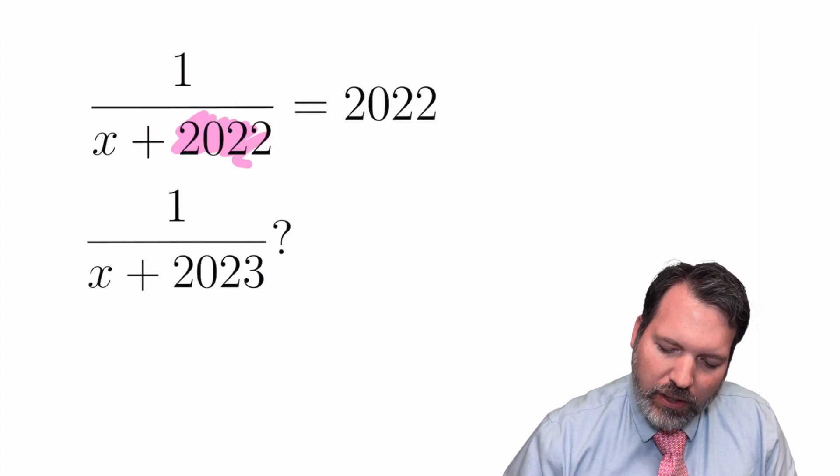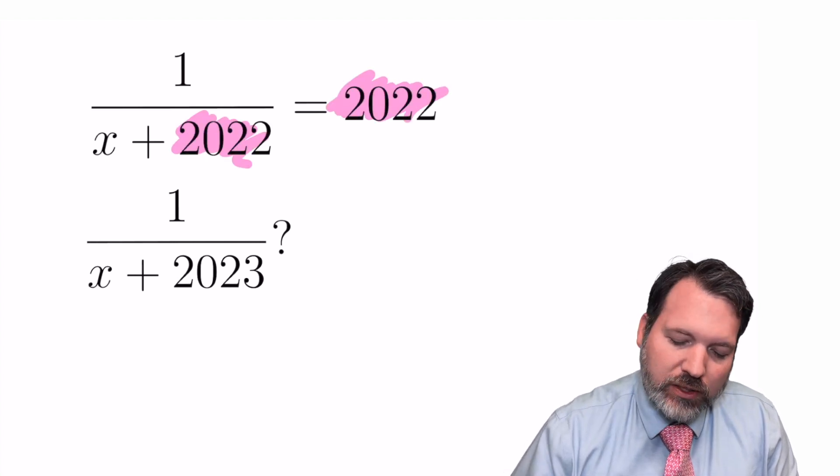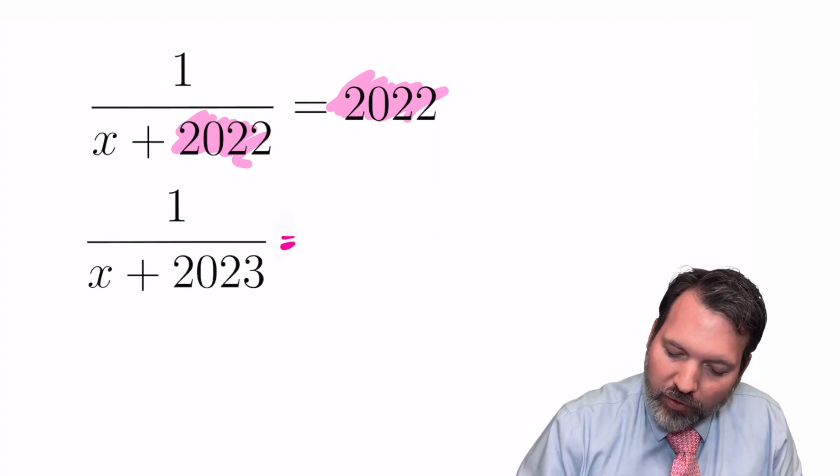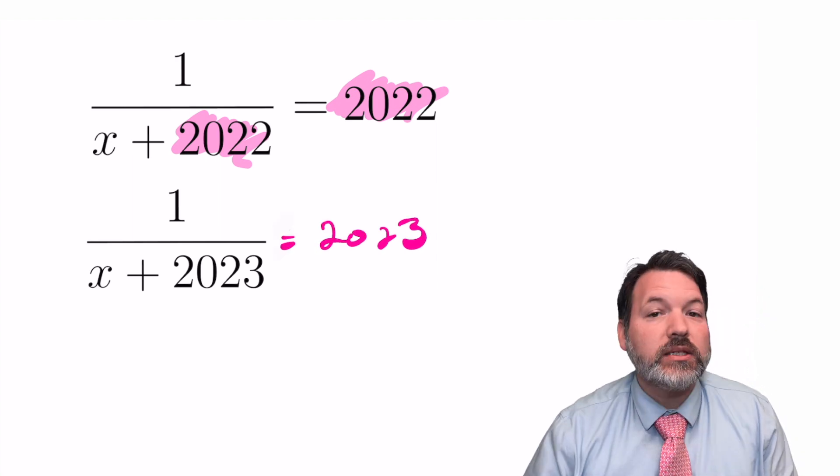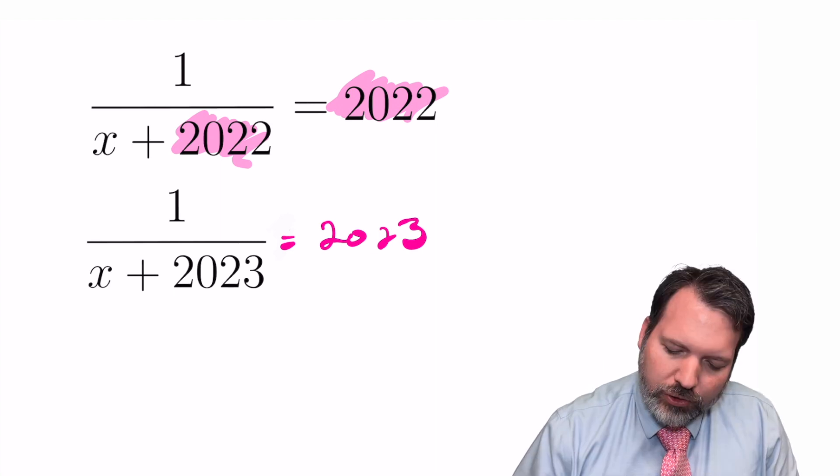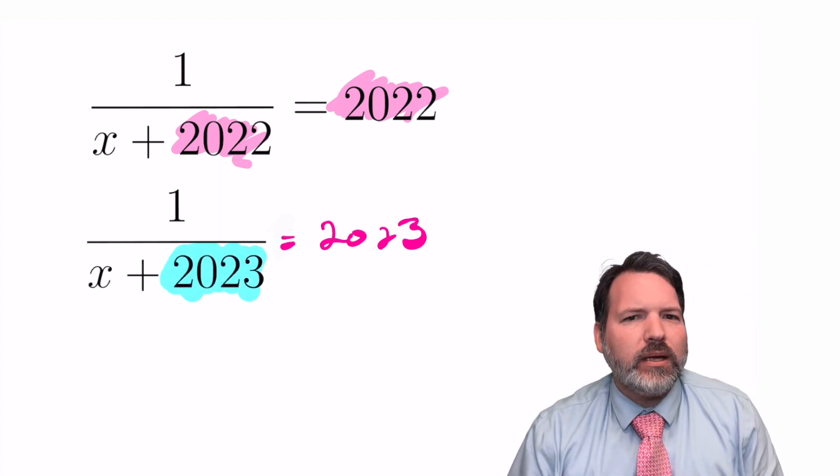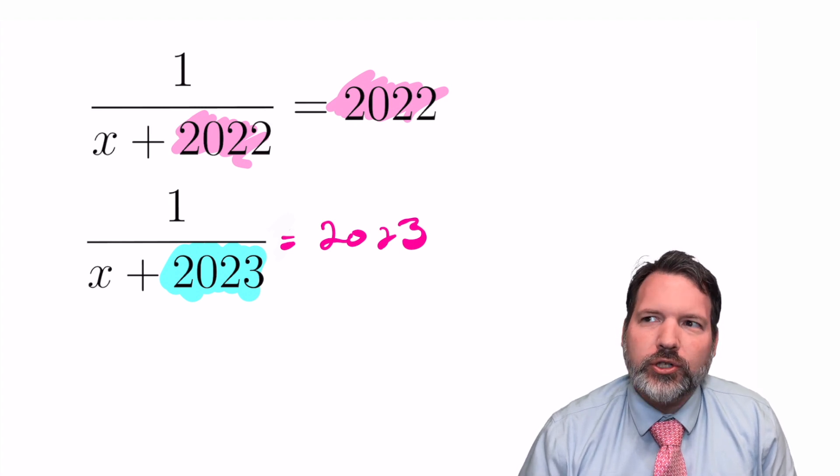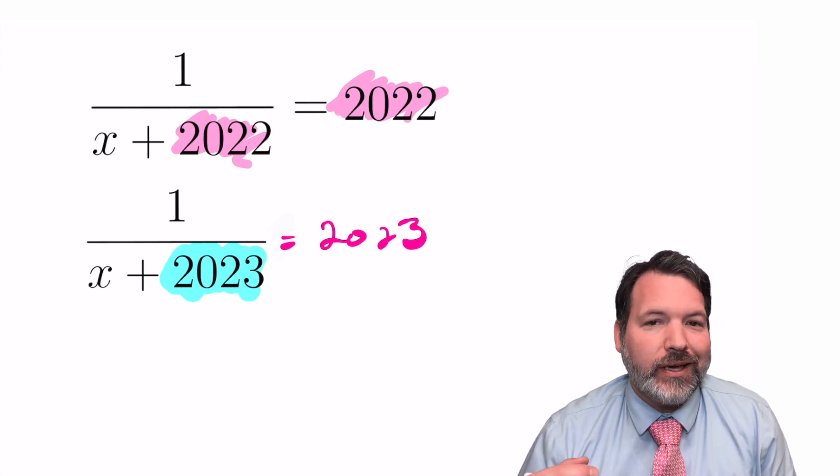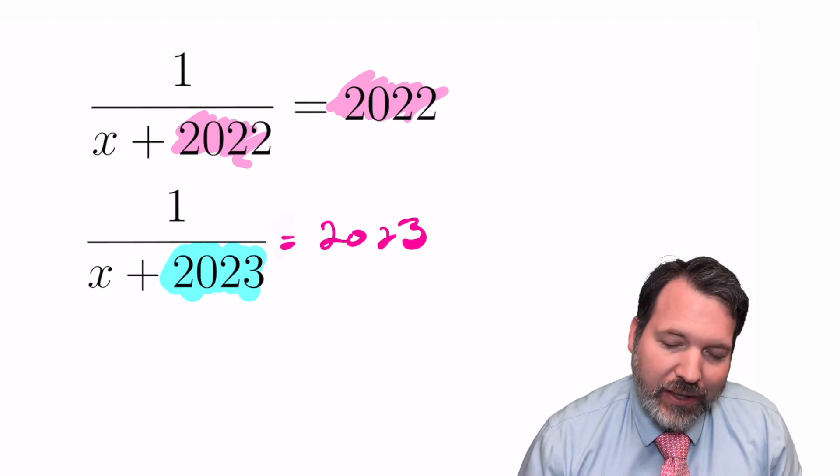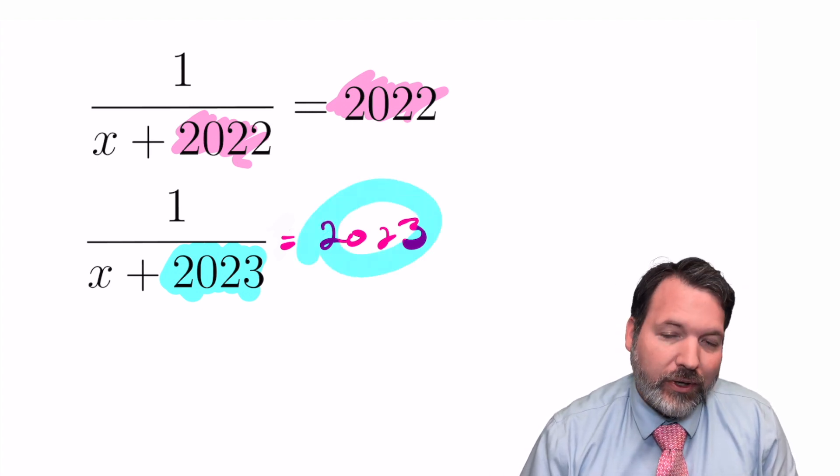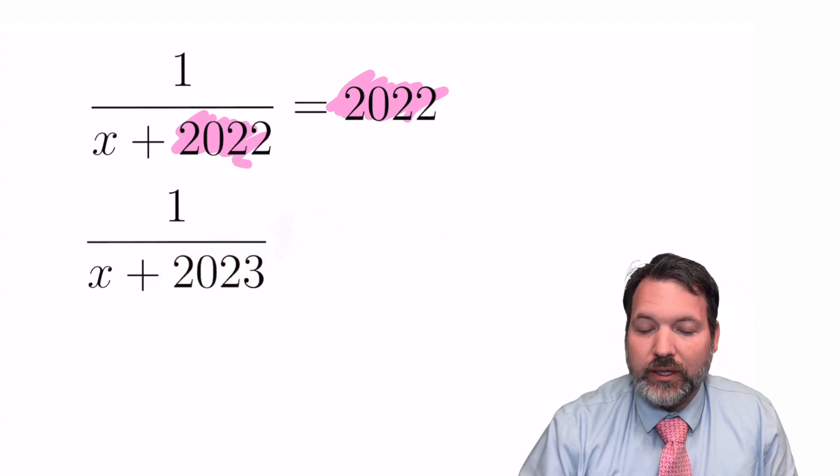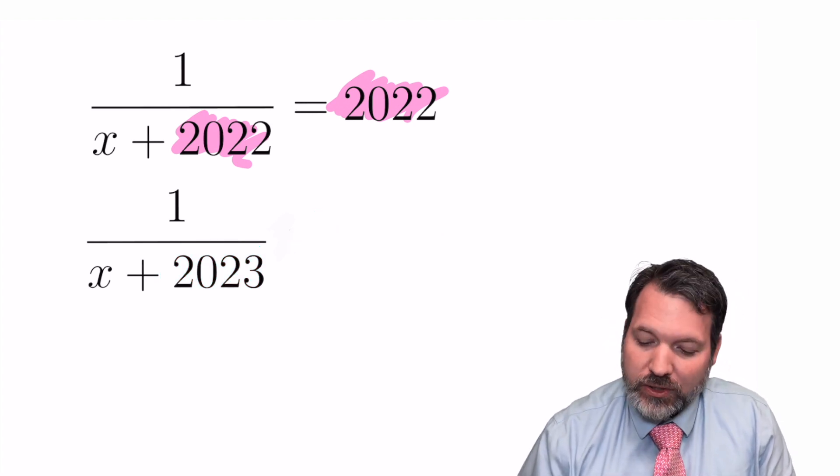Very naively, you might immediately assume that if 1 over x plus 2022 was 2022, then perhaps 1 over x plus 2023 is also 2023. But you should notice we actually run into a problem almost immediately with that reasoning. Typically, when we make the denominator of a fraction larger, the value of the fraction actually gets smaller. So I would not expect here to make this denominator one larger and also get a value one larger. But as we'll see, there are actually several weird things going on in this problem, so let's just get into it, solve it, and see what happens.